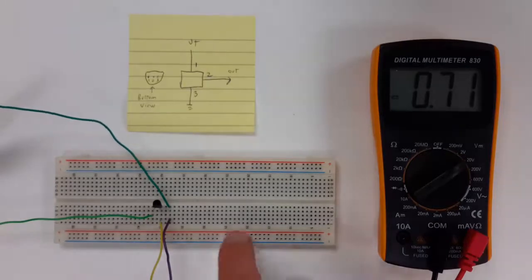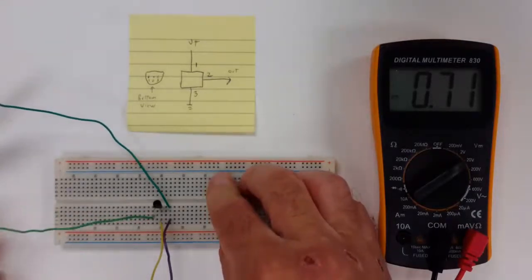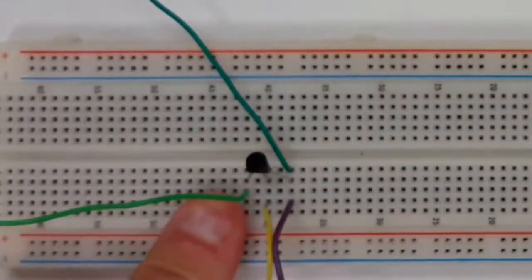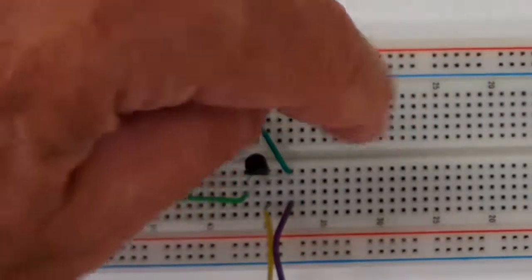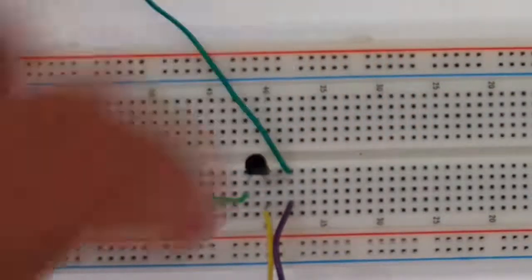The way this is hooked up is I have my positive voltage coming in on pin 1 here. I have my ground going to pin 3.